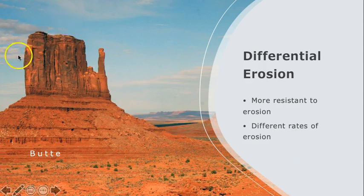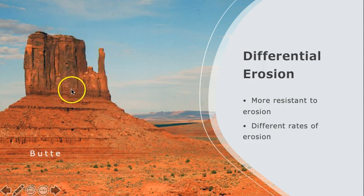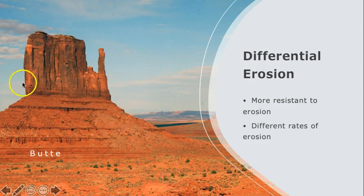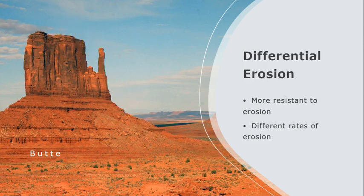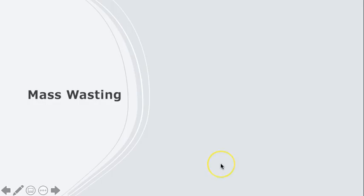Here, this top layer is more resistant to erosion than the layers beneath, and it has served to protect these underlying layers, so you end up with this landform sticking out prominently above the surrounding terrain. Mass wasting, also known by the more generic term landslides, can happen suddenly, without warning, or gradually over long periods of time. All mass wasting events move weathered material downhill under the influence of gravity.